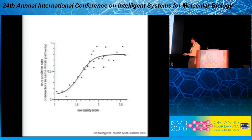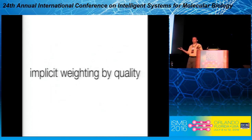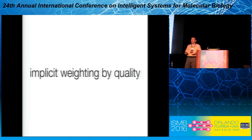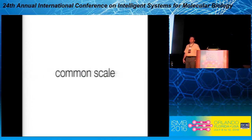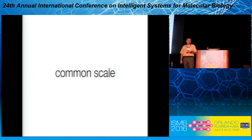By doing this, you achieve two key things. One is implicit weighting by quality — a question that always comes up with STRING: how do you weight things? We don't actively do that; it falls out of the benchmarking. If you have an experiment that is really bad, the interactions won't correlate well with pathways, giving a flat curve where the probability of being on the same pathway is low regardless of raw score. If the experiment is really good, the probability is high. So we implicitly weigh things by quality through this benchmarking. The other thing we get is putting everything on a common scale — Pearson correlation coefficients from microarray studies, observed-over-expected ratio scores, and everything else all get turned into a probability of being on the same pathway.